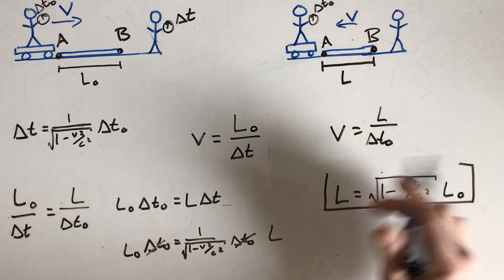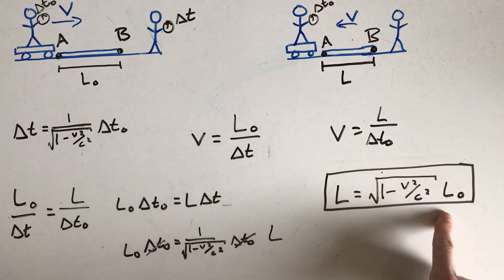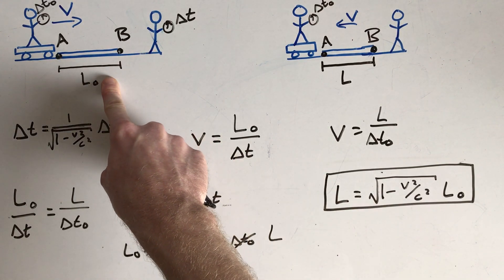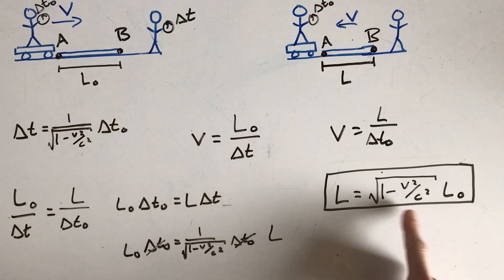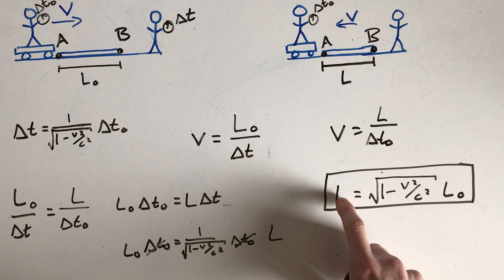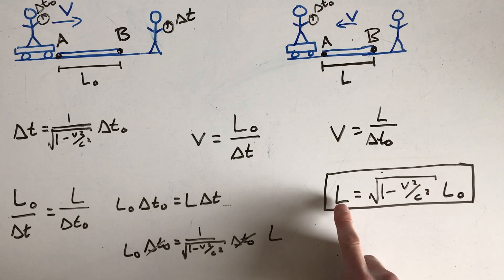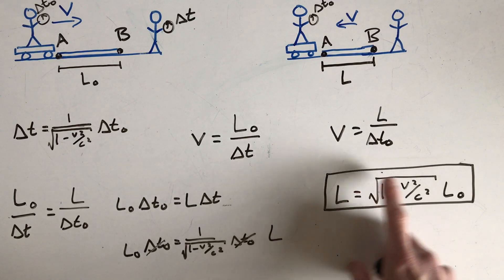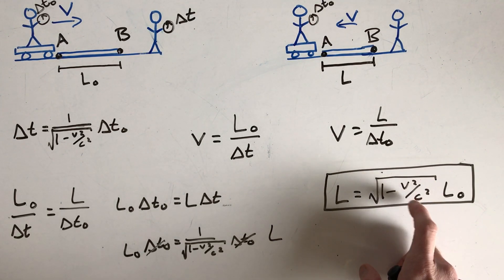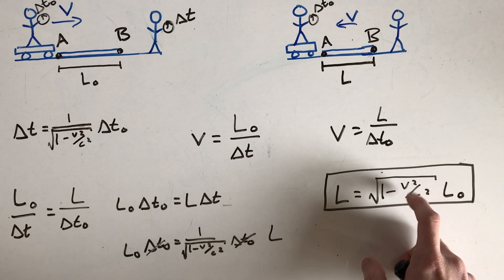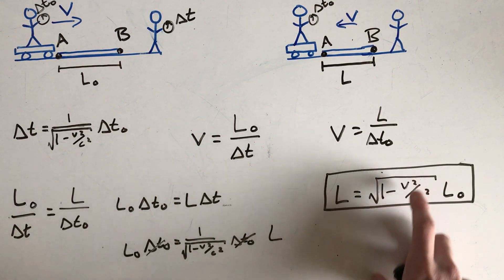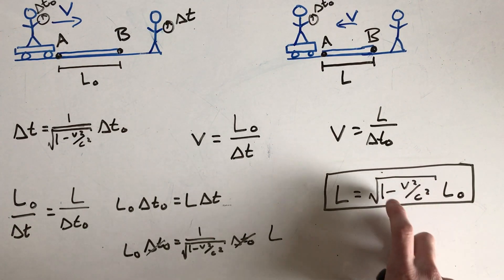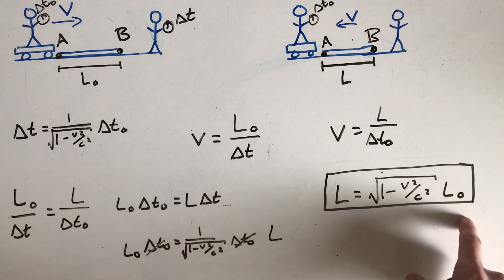All right, so this is pretty cool. This basically tells me if some object has a length L naught when it's at rest, so observed at rest, then when it's observed moving at a speed V, we can find what its length is going to be according to an observer that sees it as moving. And again, here, V squared over C squared, this is going to be something less than 1. So 1 minus that gets us something less than 1. So this factor will always be less than 1, which tells us that if an object is observed to be moving, then it will be observed to be shorter than its length at rest. That's why this is called length contraction.